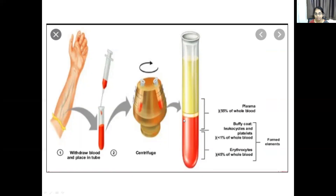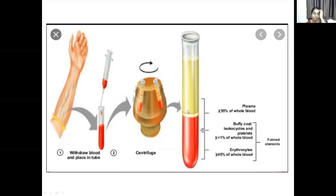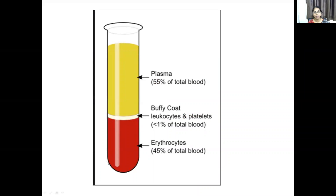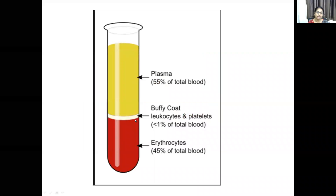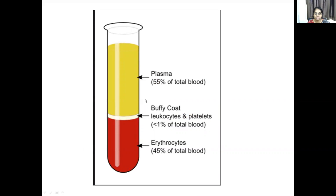The bottom layer is the red cell mass, also called hematocrit, forming almost 45% of whole blood. The second layer is the buffy coat, where leukocytes and platelets are present. The third, upper layer is plasma. The buffy coat is usually less than 1% and plasma contributes 55% of total blood. These three layers each have their own importance.